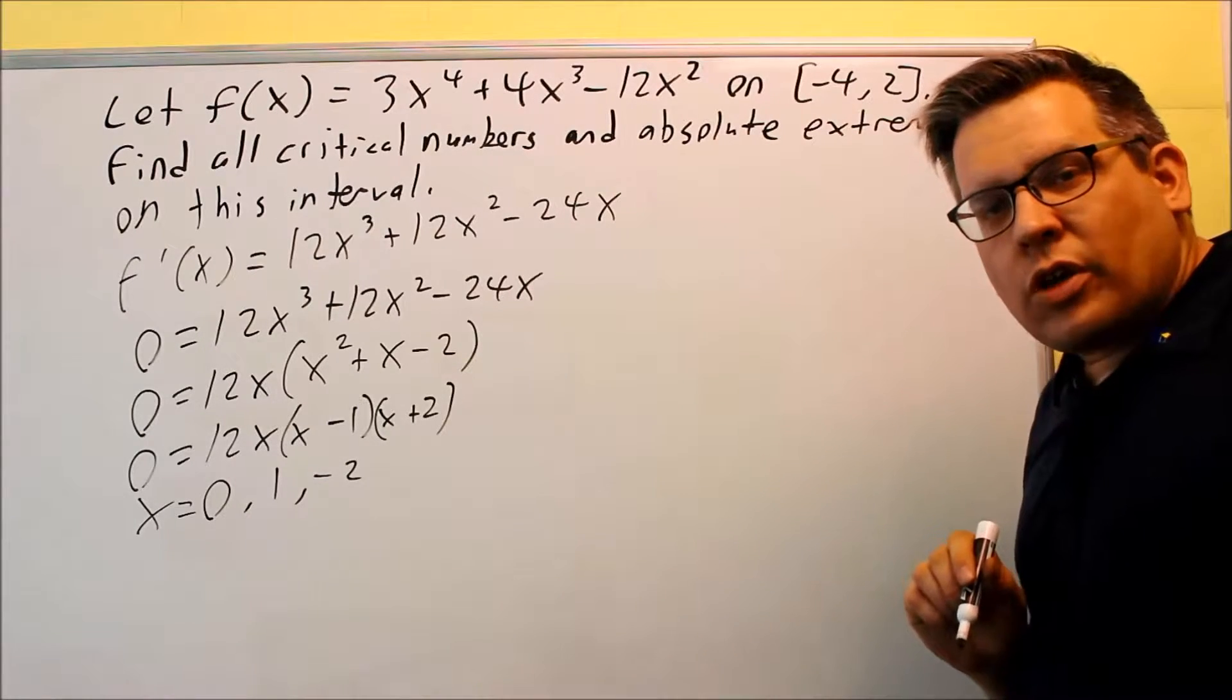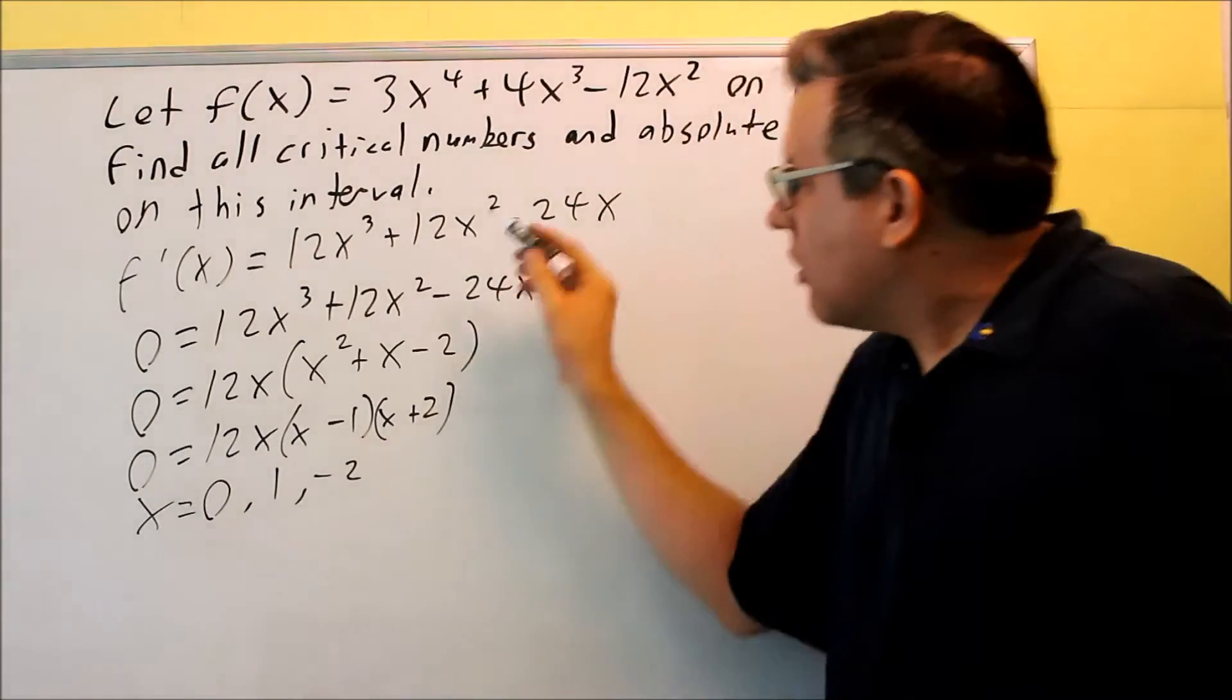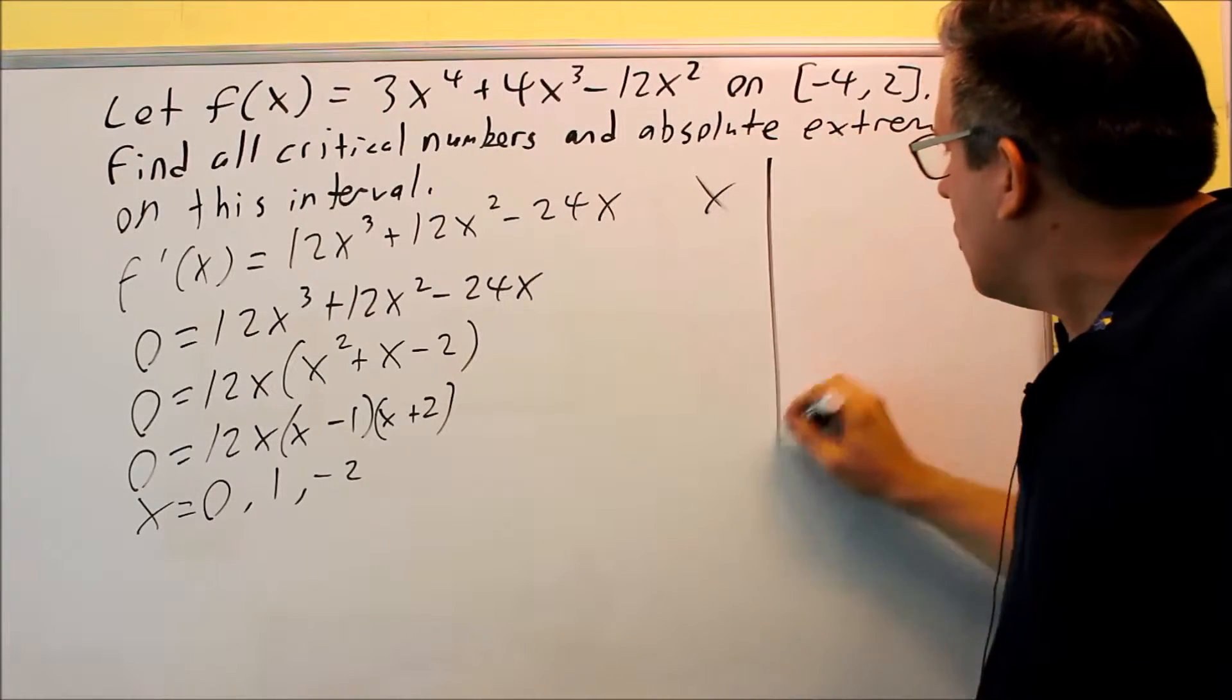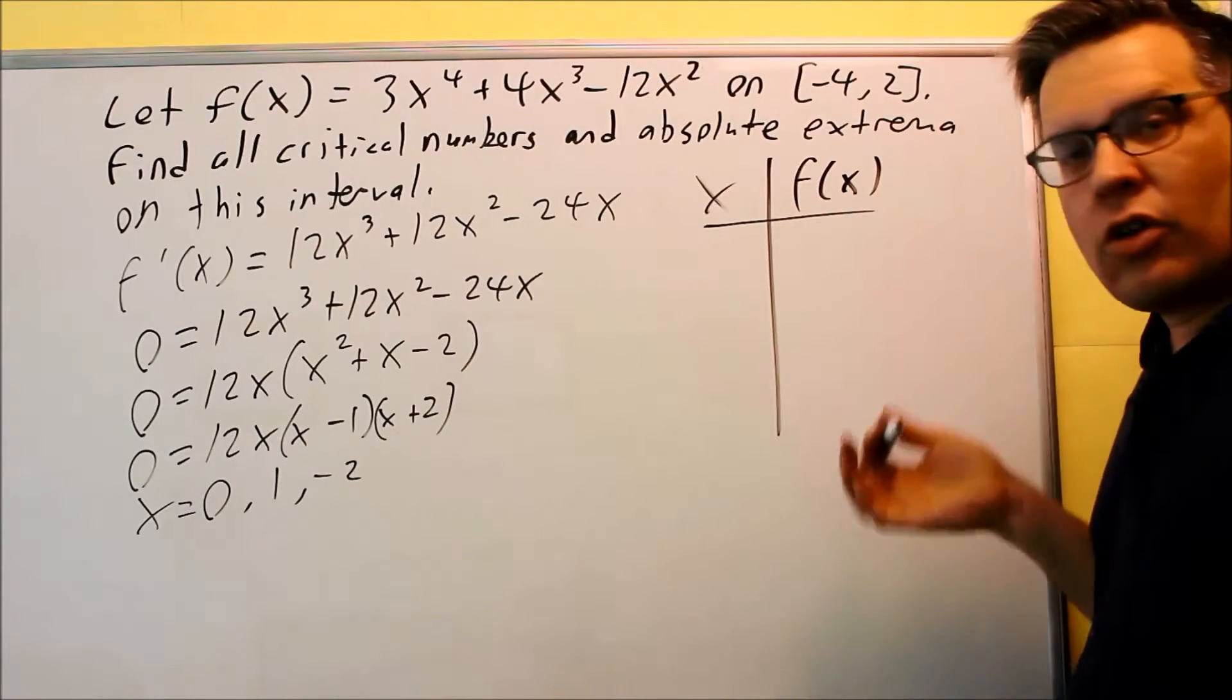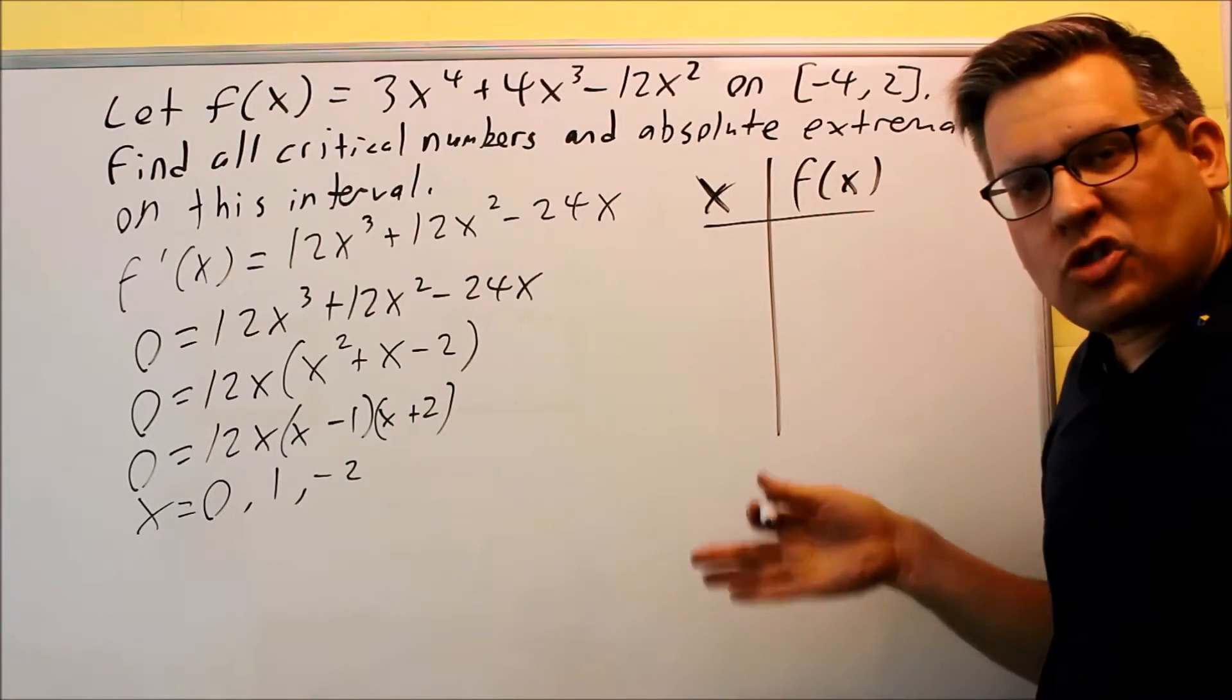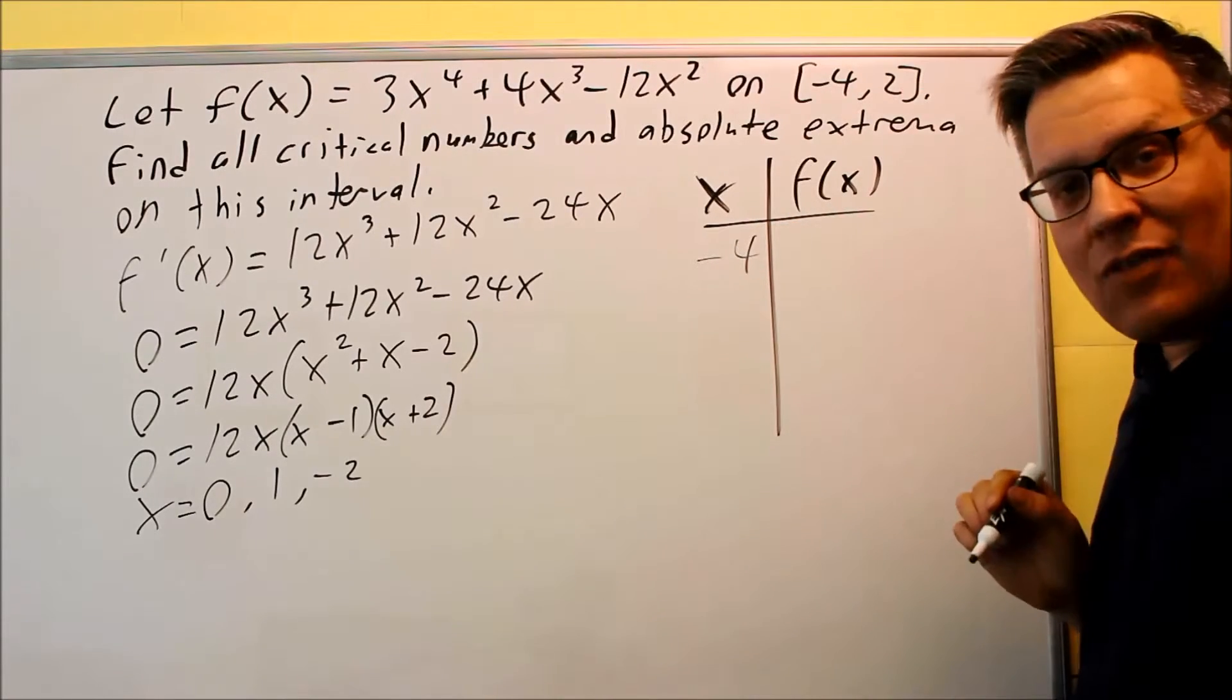Step number 2 and 3 is going to involve a table, so we're going to do both of steps 2 and 3 at the same time. We want to evaluate each of these, the critical numbers, we're going to evaluate them on f of x. We're also going to evaluate the endpoints. The best way to organize that is to make a table of values. Now, you can either make it go horizontally like in the notes, or you could do it vertically like this. I'm going to put all of our points that we found here, and I'm going to put them in order from smallest to largest.